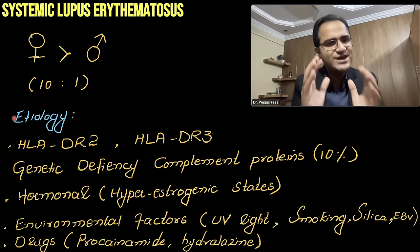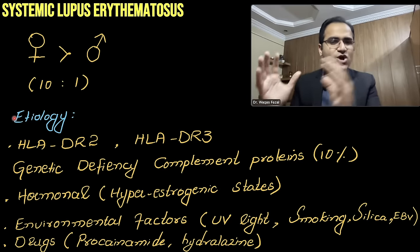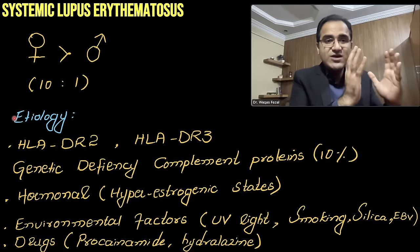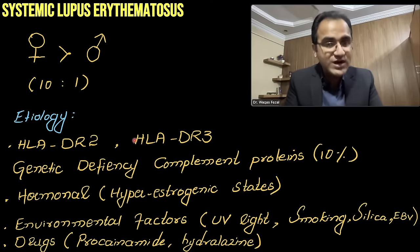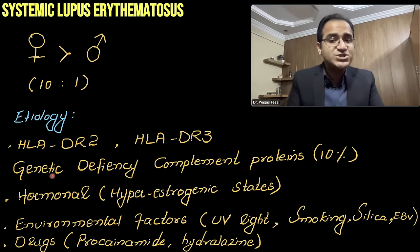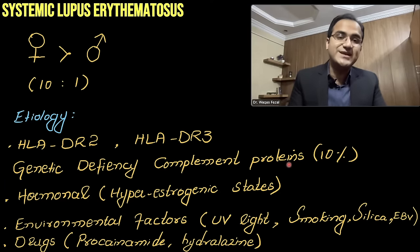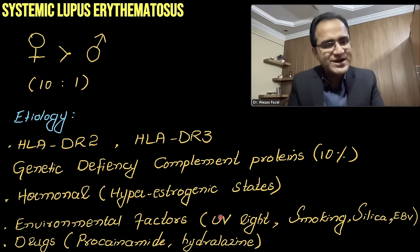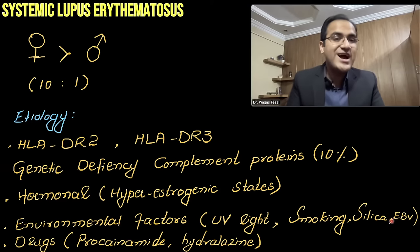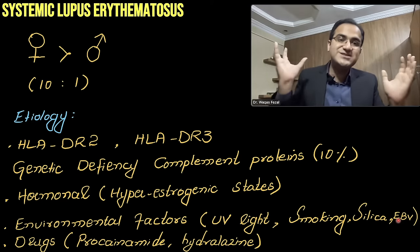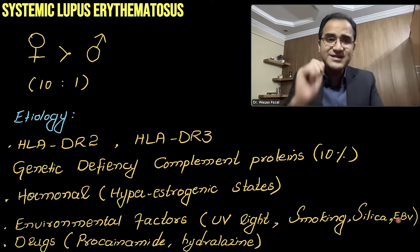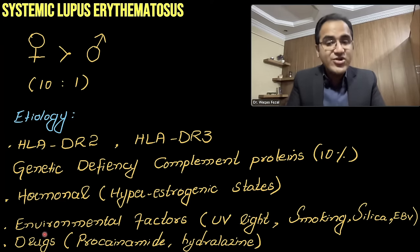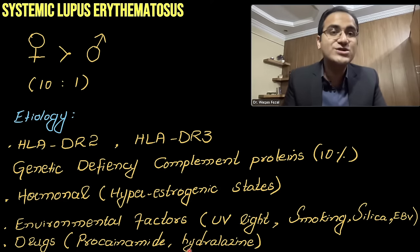Coming to the etiology of SLE, there are two main factors: genetic factors and environmental factors. The main genetic involvement includes HLA-DR2 and HLA-DR3, which are associated with SLE. Genetic deficiency of complement proteins can also cause SLE. If a person with these genetic differences gets exposed to environmental triggers — including ultraviolet light, smoking, silica, or Epstein-Barr virus — these triggers activate the genes and result in SLE. Additionally, hyper-estrogenic hormonal states are associated with causing SLE, which is why it is more common in females. Drugs including procainamide and hydralazine can cause drug-induced SLE.